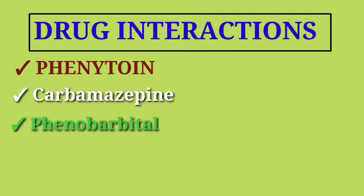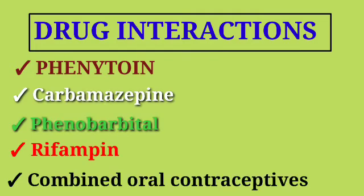Let's start with drug interactions. Lamotrigine has the following five drug interactions: phenytoin, carbamazepine, phenobarbital, rifampin, and combined oral contraceptives. Try to remember by practicing them.